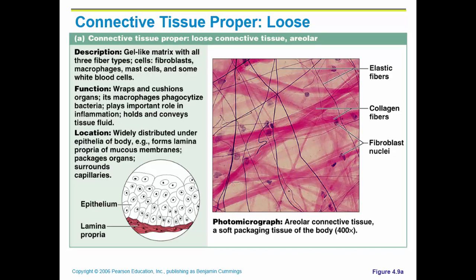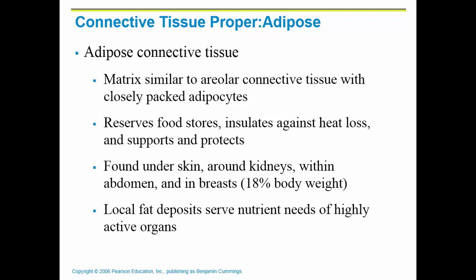You can see that there are fibers because all connective tissue has a matrix, which is the non-living portion made up of ground substance and fibers, and then the cells. This tissue has lots and lots of different fibers, and then you can see some cells scattered throughout.